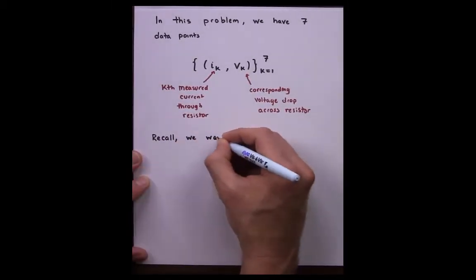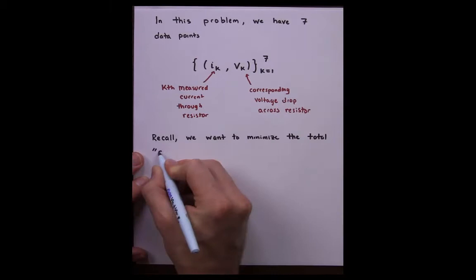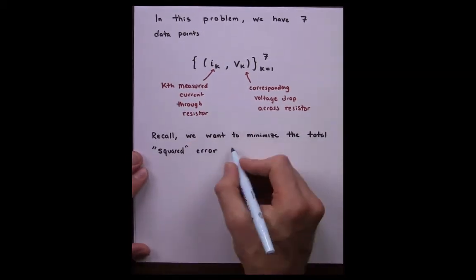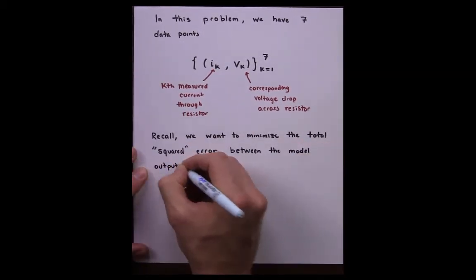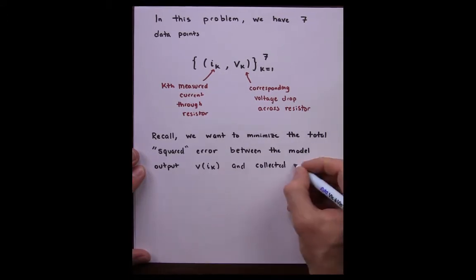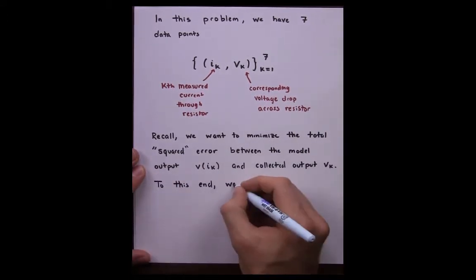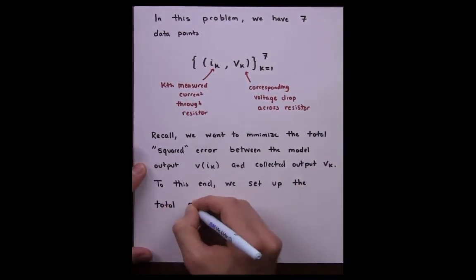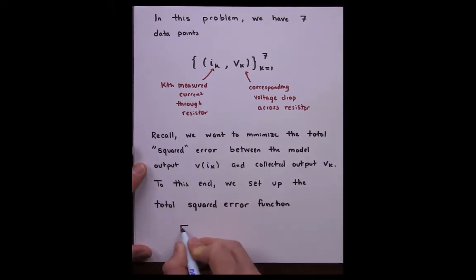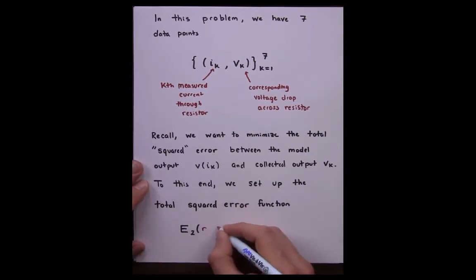Recall, we want to minimize the total squared error between the model output V(I_k) and the collected output V_k. To this end, we set up the total squared error function E_2, which is a function of R and B,